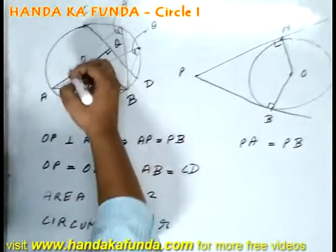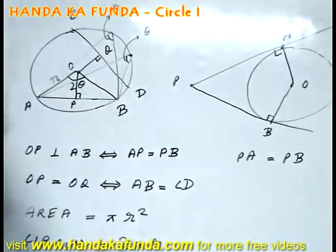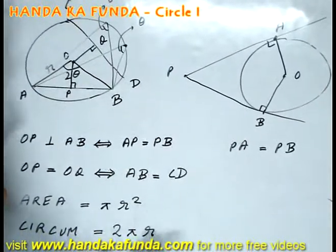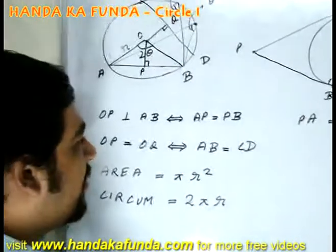Say I am given a circle which has the radius of R units. Its area will be pi R square and its circumference is 2 pi R. But that's something you already knew.